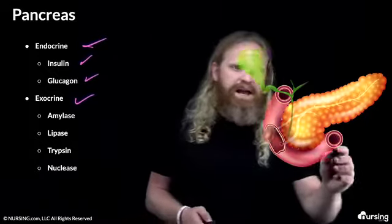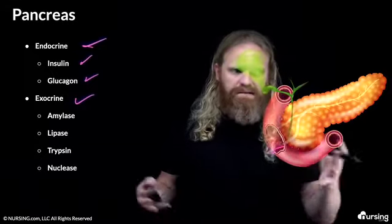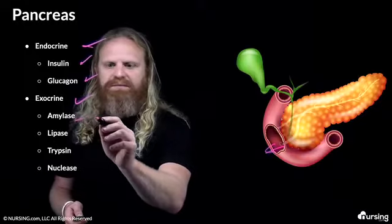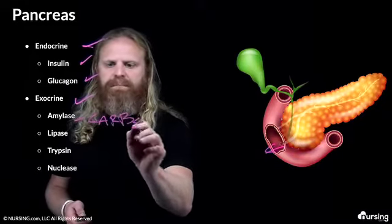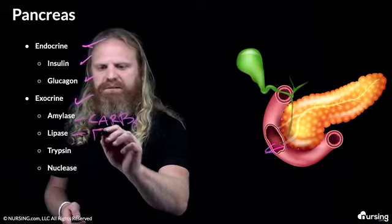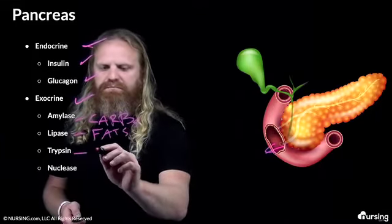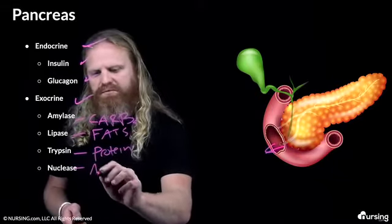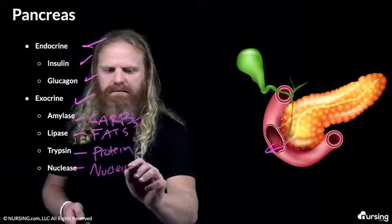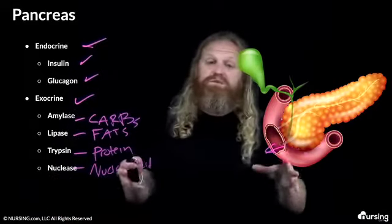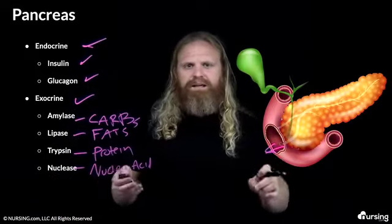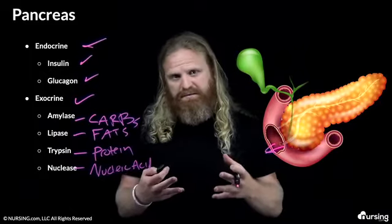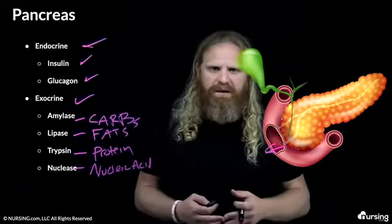Exocrine means it secretes chemicals out into the GI tract, and you can see that connection right there. With the pancreas, it secretes amylase, which helps with the digestion of carbs; lipase, which helps with the digestion of fats; trypsin, which helps with the digestion of protein; and nuclease, which helps with nucleic acid. You can see how important the pancreas is with nutrition and absorption of nutrients.